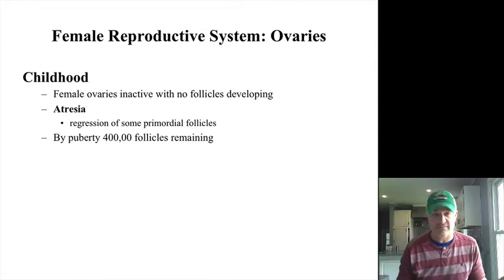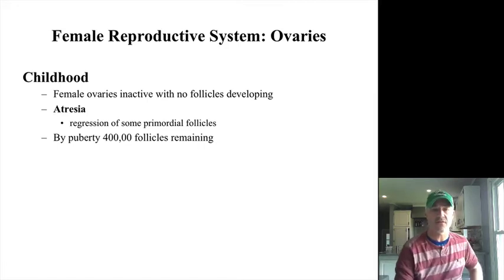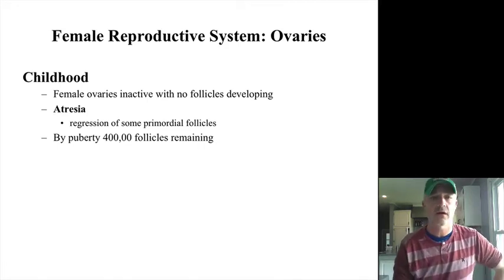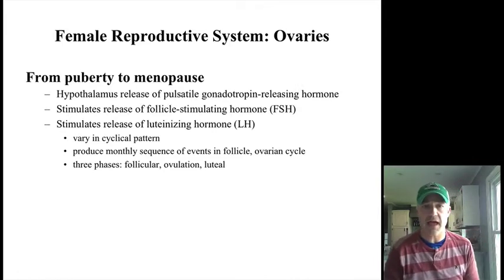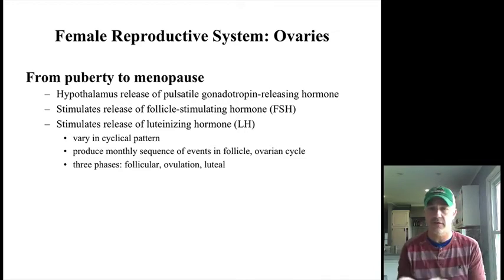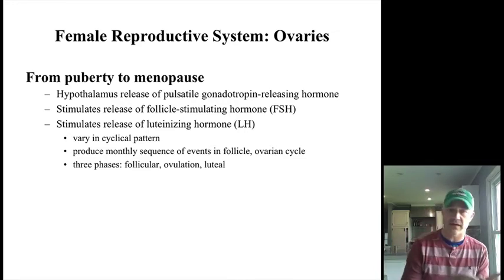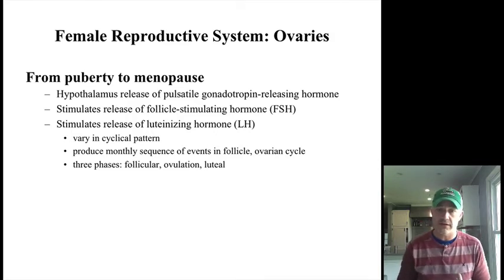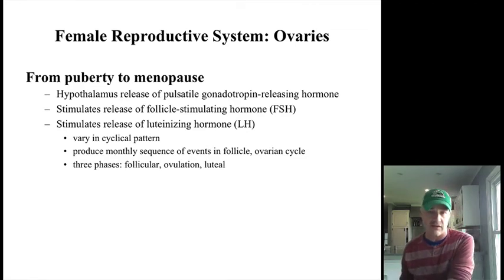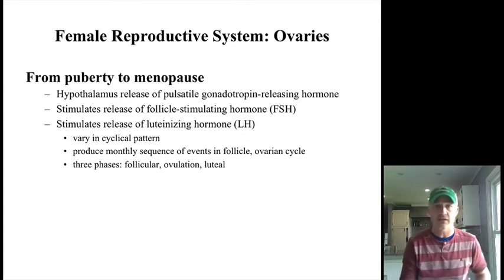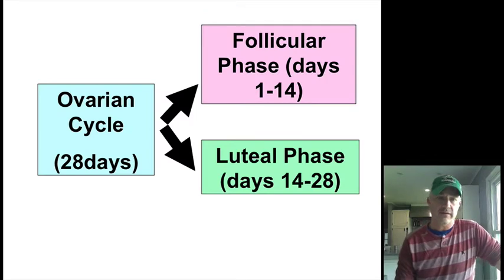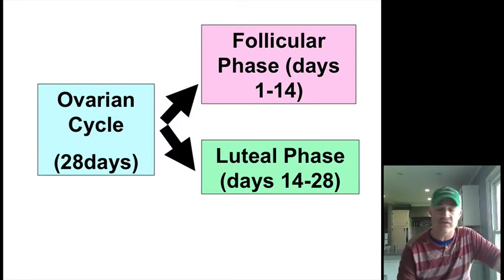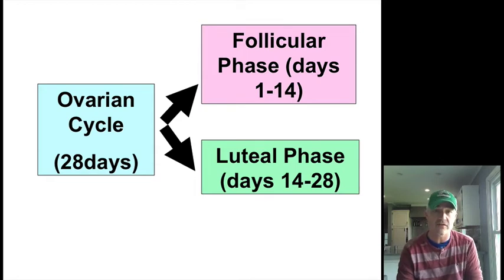Some of those follicles are going to regress during childhood, but by puberty you have about 400,000 follicles. From puberty to menopause we are going to have this monthly cycle take place, with a pulsed release of gonadotropin releasing hormone stimulating FSH and LH, giving us a cyclical pattern. On average it's about a 28-day cycle — not always the case, some women it is longer, some shorter, some irregular.